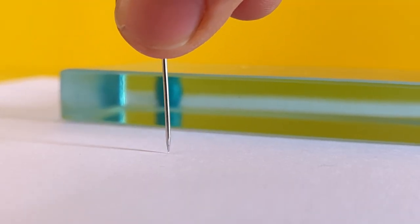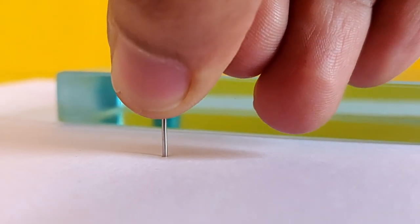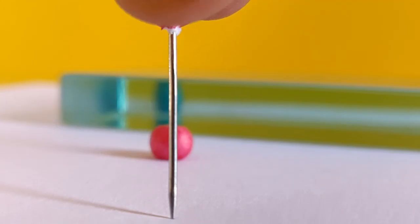Push two pins on your side of the glass slab in the same line as the pins on the incident ray.